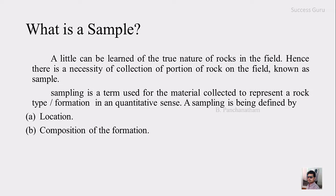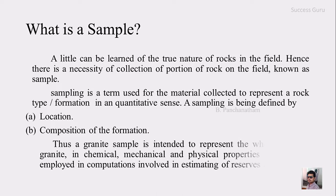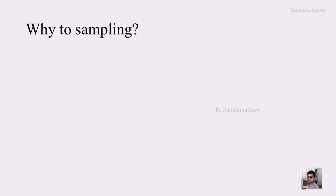A sample is defined by its location as well as its composition. When discussing a sample, a granite sample is intended to represent the whole body of granite — in its chemical, mechanical, and physical properties. That sample can be employed in computations involved in the estimation of reserves. The piece collected from the field should represent the whole rock mass physically, chemically, and mechanically. Whatever tests you do in the lab, the results should match the whole rock in the field. That is the minimum criteria for a sample.